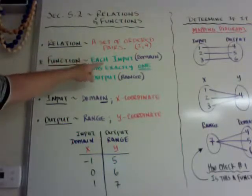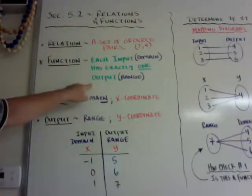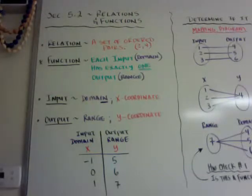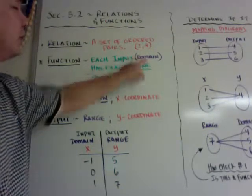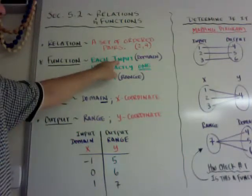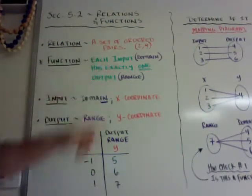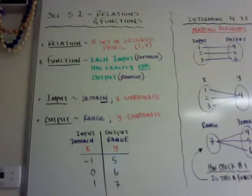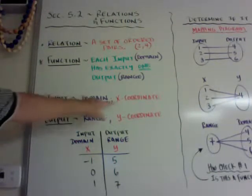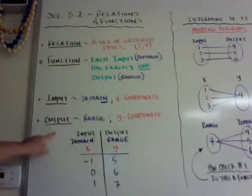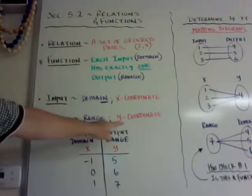A function is when each input has exactly one output. This will be on the quiz and the test, and I'll expect the definition word for word. Each input, otherwise known as the domain, has exactly one output. Input is also known as the domain or the x-coordinate, and output is also known as the range or the y-coordinate.